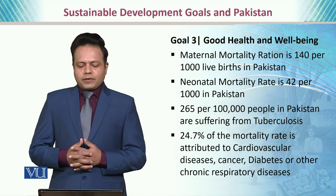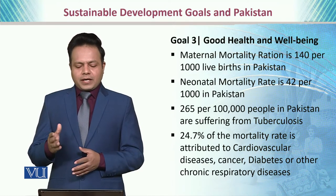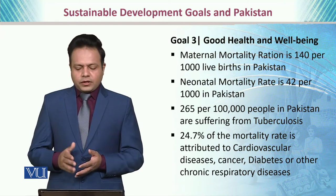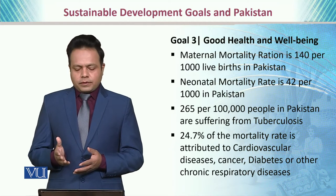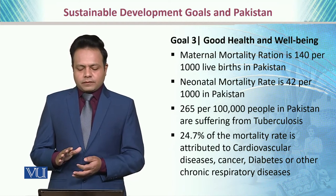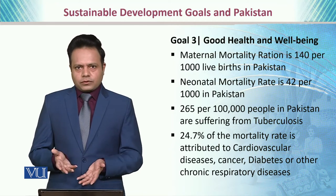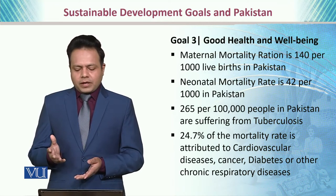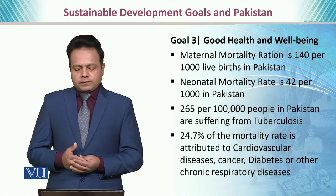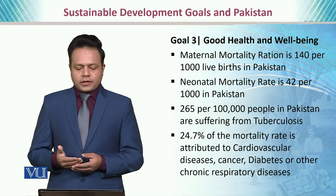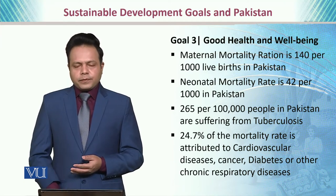Goal three is good health and well-being. The maternal mortality rate is 140 per thousand live births in Pakistan, and the neonatal mortality rate is 42 children per thousand live births — meaning 42 out of every 1,000 children born are dying at an early age. 265 per hundred thousand people are suffering from tuberculosis, which is a largely curable disease. 24.7% of the mortality rate is attributed to cardiovascular diseases, cancer, diabetes, and other chronic respiratory diseases.